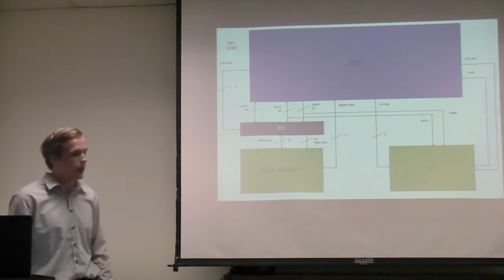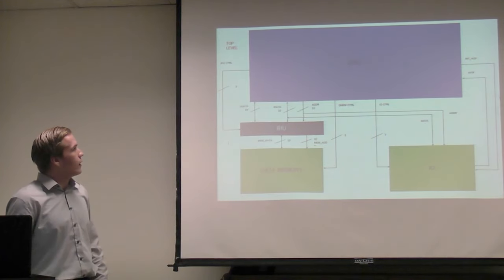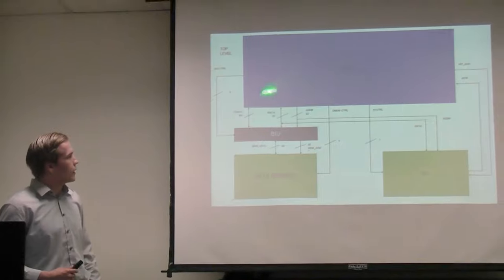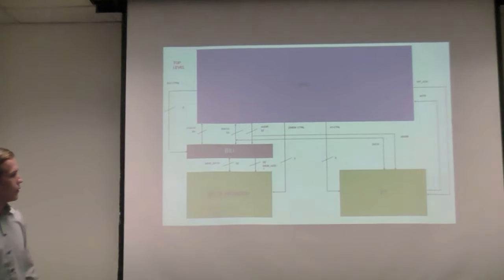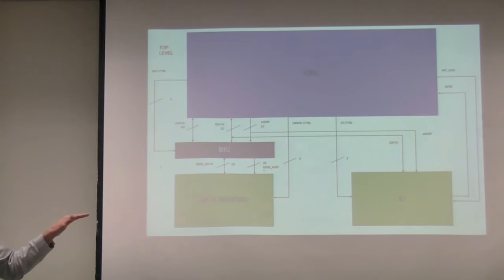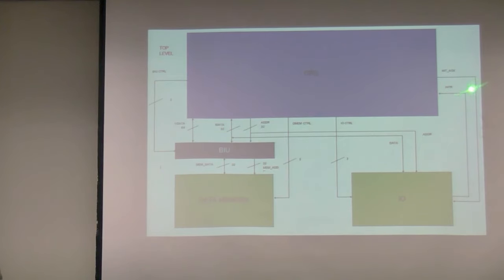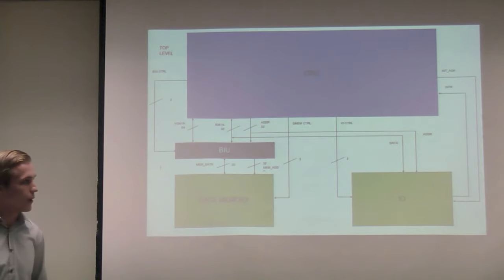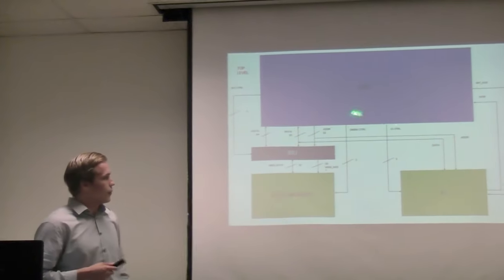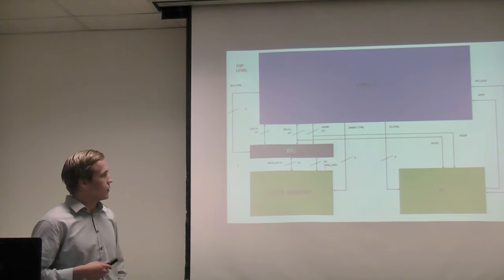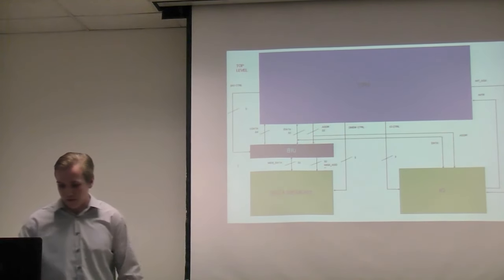This is the top level of our design. We have our CPU, control signals going to the BIU, our data memory and IO. BIU is our bus interface unit, specifically connected to data memory right now — a future enhancement would be connecting it to IO as well. We have control signals going to IO, the interrupt and interrupt acknowledge coming from the CPU, and interrupt going to the CPU. We also have address signals and data signals going to the bus interface unit.